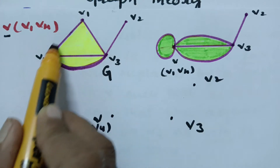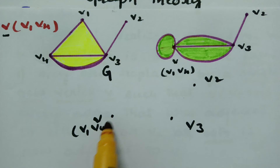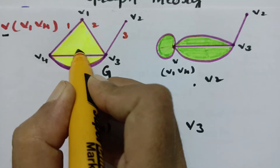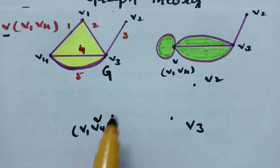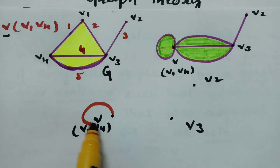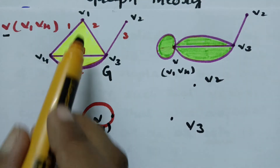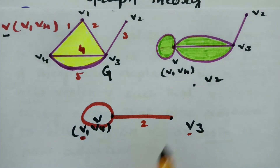V1 has edges towards V3 and V4. Since V1 is already fused, whatever edges it had are now carried over. The edges are 1, 2, 3, 4, and 5. V1 to V4 — since V1 and V4 are the same fused vertex — I am drawing a loop. Wherever fusion occurs, there should be a loop. Next, V1 to V3: this is V1 and this is V3, so I am giving an edge here — edge number 2.